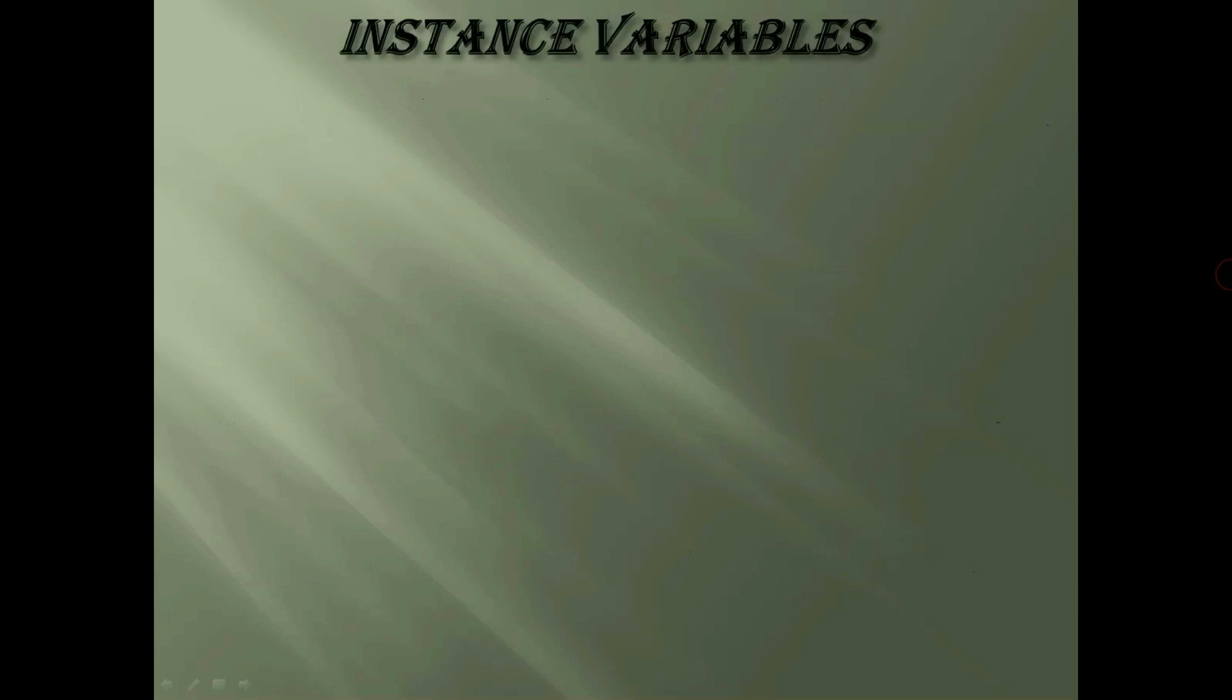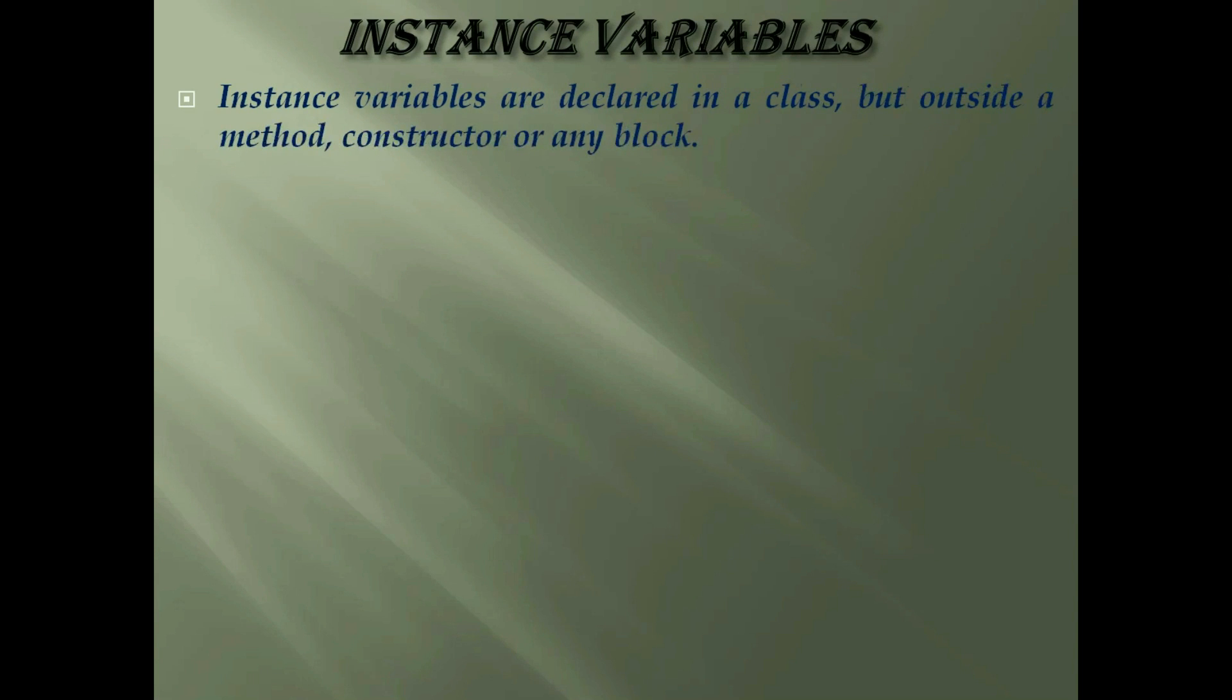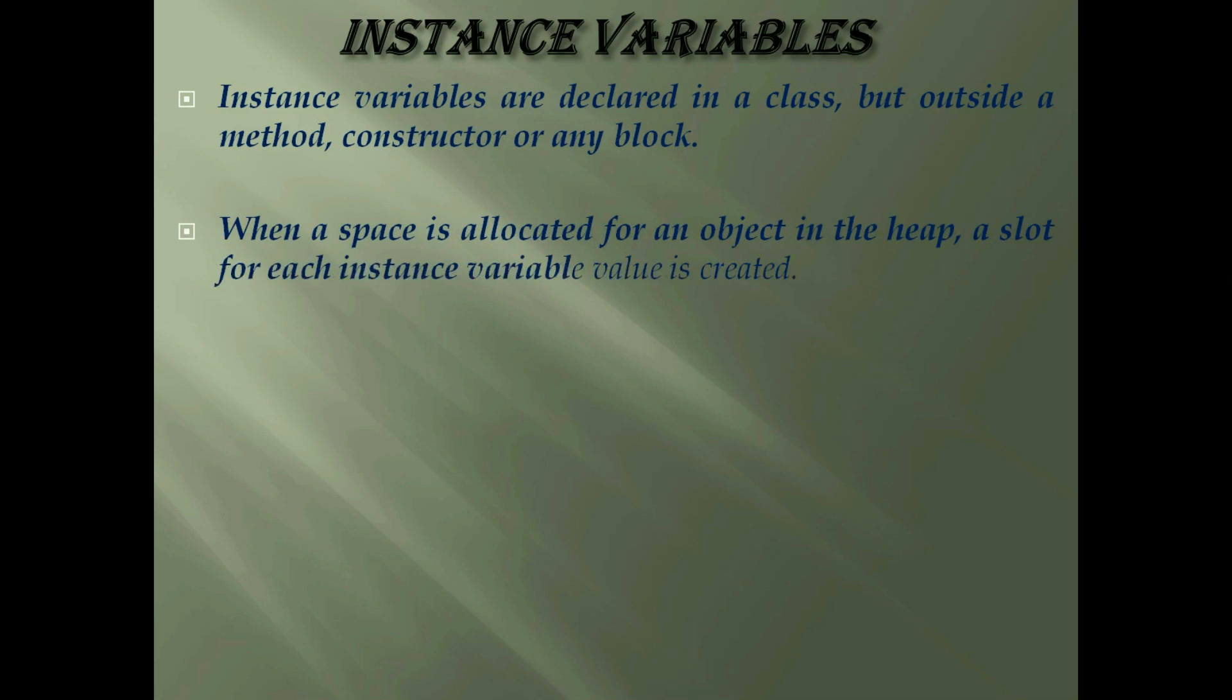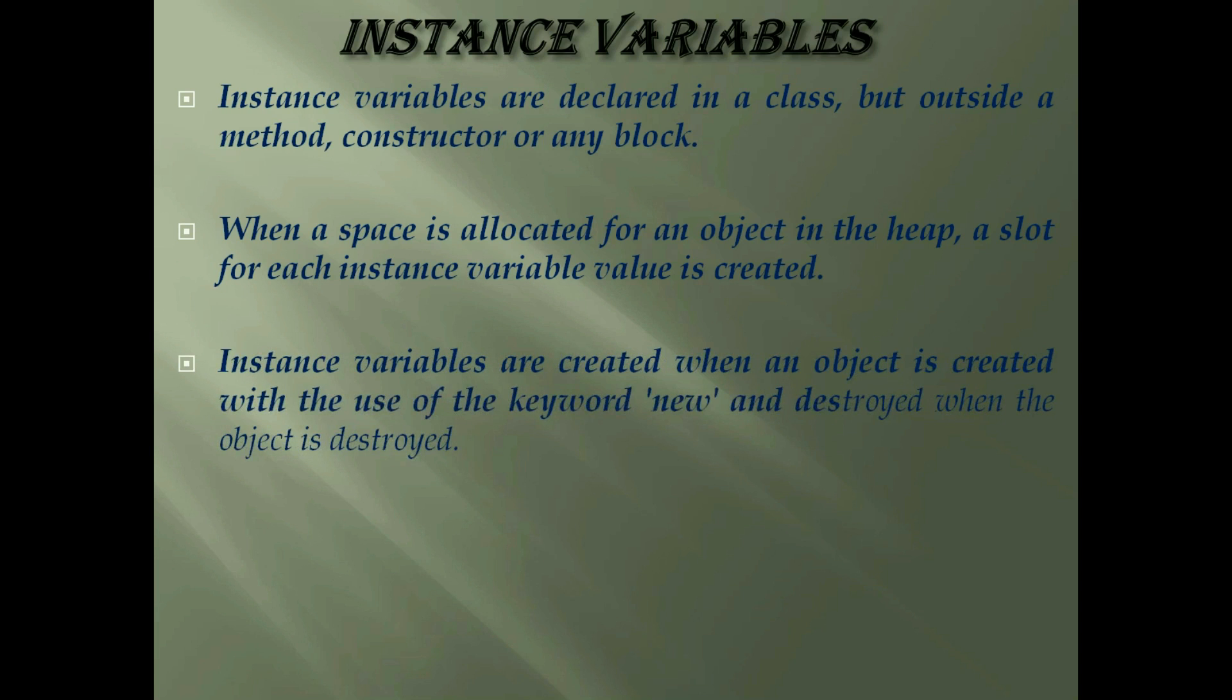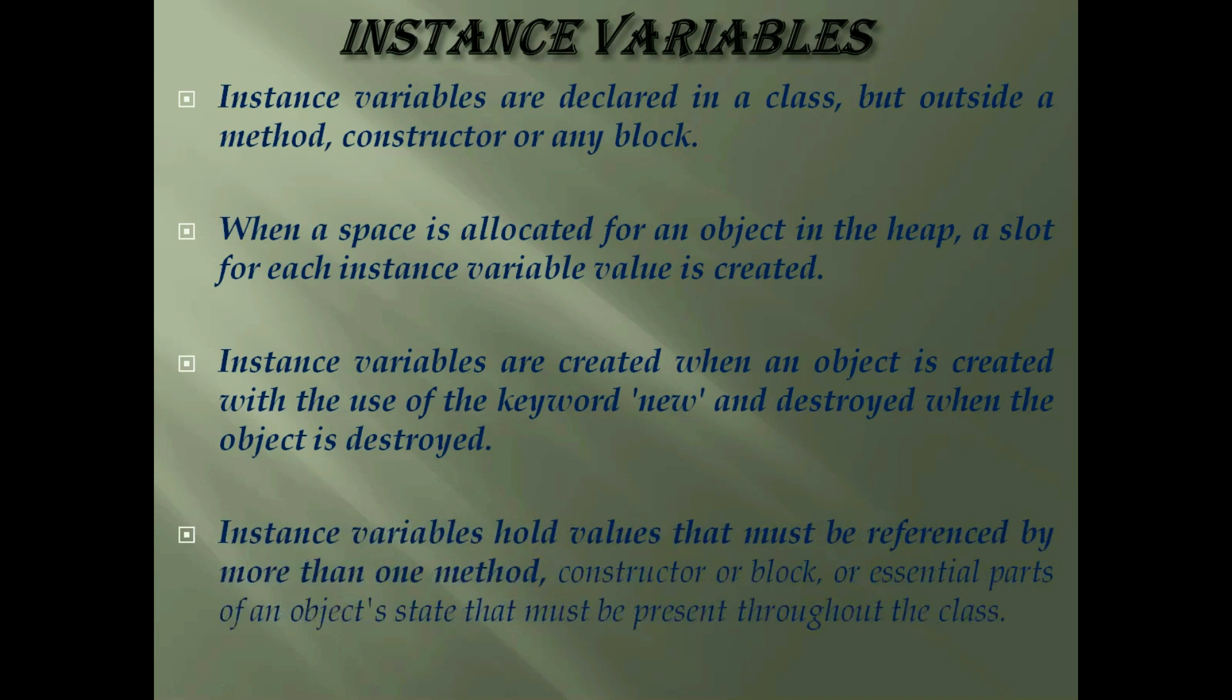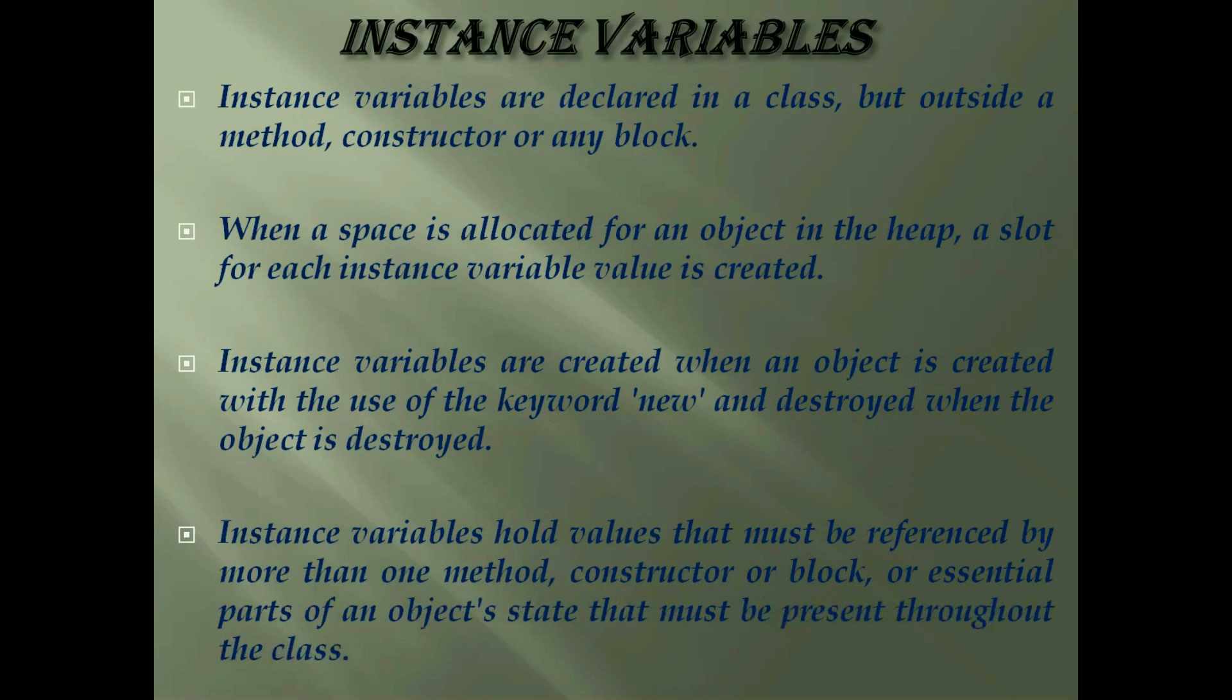Next is instance variables. Instance variables are declared in a class but outside a method, constructor or any block. When a space is allocated for an object in the heap, a slot for each instance variable value is created. Please note that objects are created in the heap memory. Instance variables are created when an object is created with the use of the keyword new and destroyed when object is destroyed. Instance variables hold values that must be referenced by more than one method, constructor or block, or essential part of an object's state that must be present throughout the class.